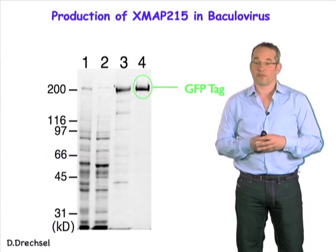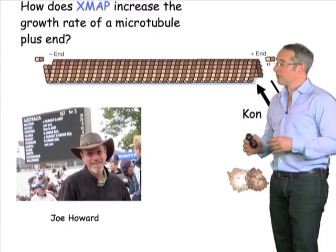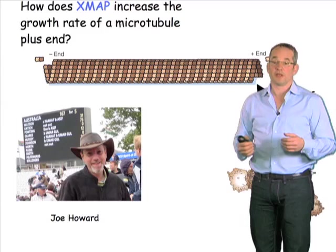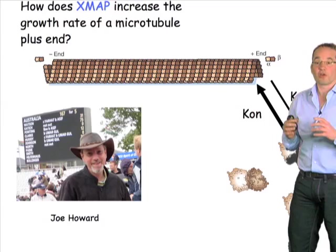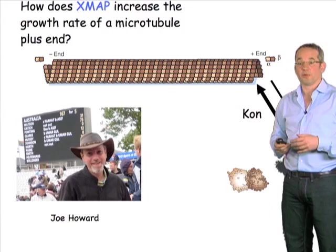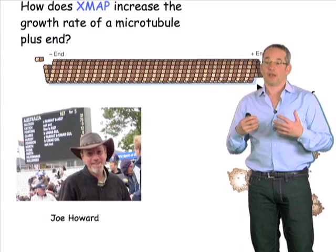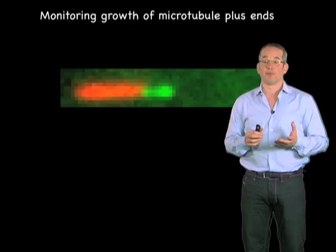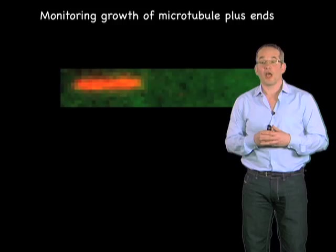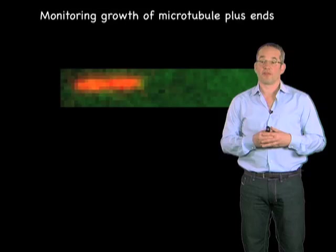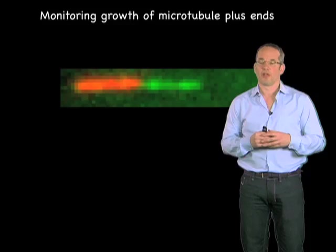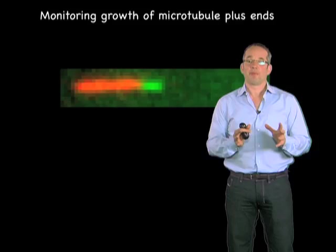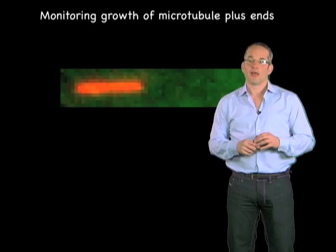The work I'm going to talk to you about has been done together with Joe Howard, who's a close collaborator, and most of the work over the last 10 years on microtubules has been done together with Joe. We'd like to look at the role of XMAP in controlling the growth rate of microtubules. In order to do that, we have to look at microtubule growth in the test tube, particularly at the growth of the plus ends. We can monitor that using microscopy — the red segment marks the minus end, and the green segment marks the plus end. You can see the green segment growing from the red minus segment. The red segment is stable — not growing and shrinking — and by stabilizing the minus end, we can isolate the plus end growth and look at how that's regulated.